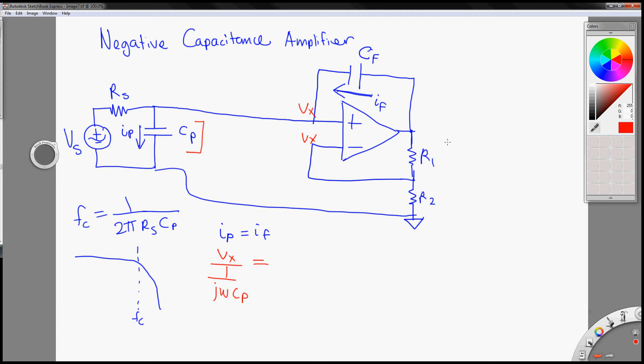And then it's equal to If, which is Vout minus Vx over 1 over j omega Cf. And this reduces to, let's cancel out this on both sides, and you can reduce this to 1 over Cf, I mean Vx over Cf, it's equal to Vout minus Vx over Cp.